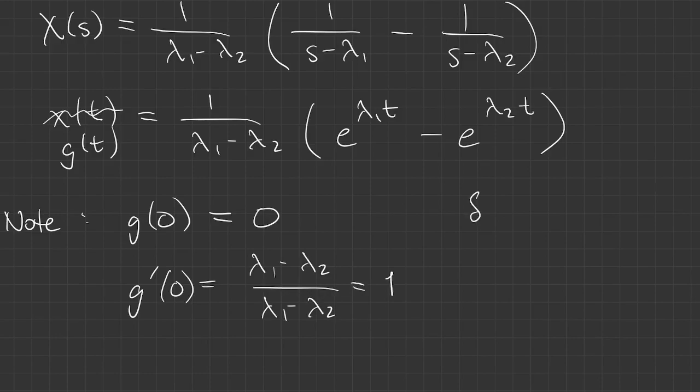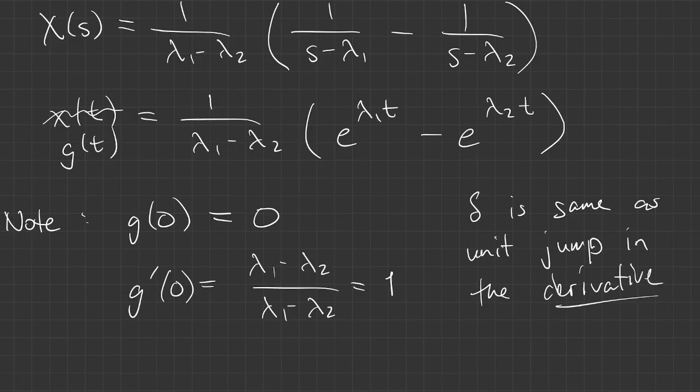So that means in the second order problem, an impulse is the same thing as a unit step or a unit jump in the derivative of the solution. In the first order problem, it causes a jump in x. In the second order problem, it causes a jump in x prime.